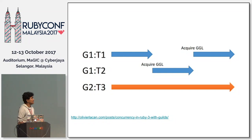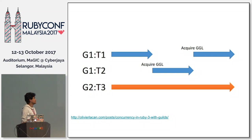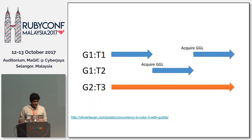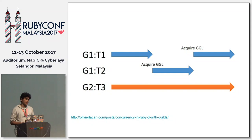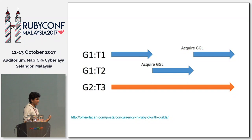I actually contacted Koichi a few weeks back and asked about this implementation and any progress. They have started fine-tuning their fiber implementation in Ruby MRI, which will support Guild later. They haven't started implementing Guild yet, so we still have several years to go.